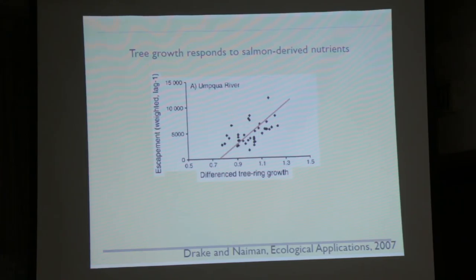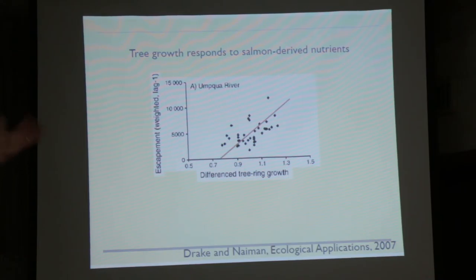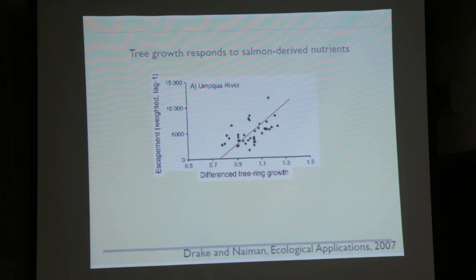Salmon like coho will often die not in the channel but at the foot of trees, and their nutrients get sucked up by the trees. A popular research area is how much riparian ecosystems are dependent on the nutrient subsidies which salmon have gained in the ocean and then deposited in the riparian zones. I want to highlight a study by Deanne Drake and her advisor Bob Nyman — she cored trees and measured tree rings of trees growing right on the riparian strip on the Umpqua River, measuring tree growth by tree ring width. She did this in two places at each site: one site where salmon run was accessible to the ocean, and she got a history of those trees' growth over time.